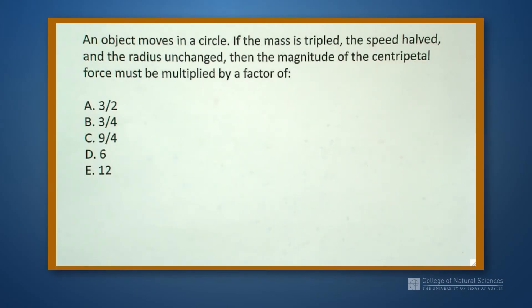This question says an object moves in a circle, and if we triple the mass, so we go from a small car to a large truck, and we halve the speed, say 60 miles an hour down to 30 miles an hour, and we go around the same curve, the radius remains unchanged, what is the magnitude of the centripetal force that must be multiplied by a factor of? So it's a ratio problem.